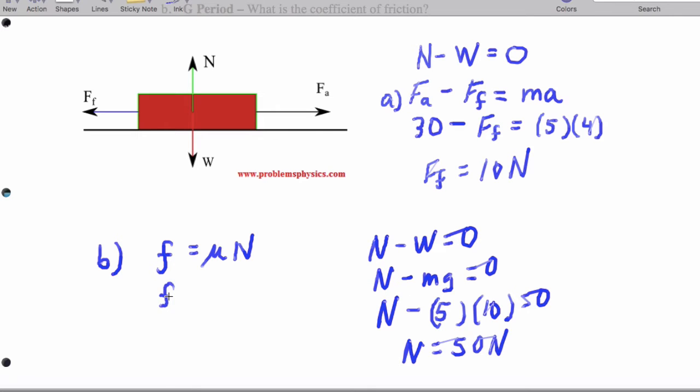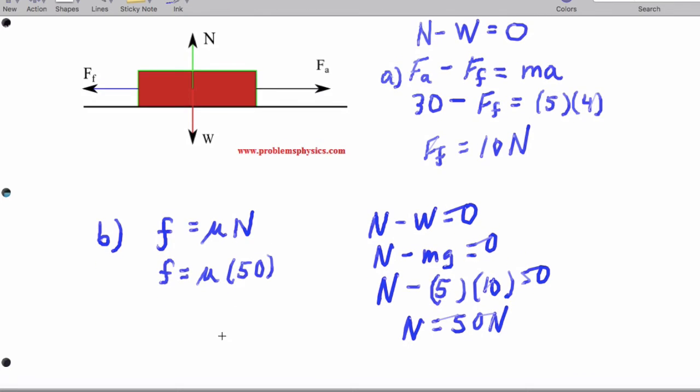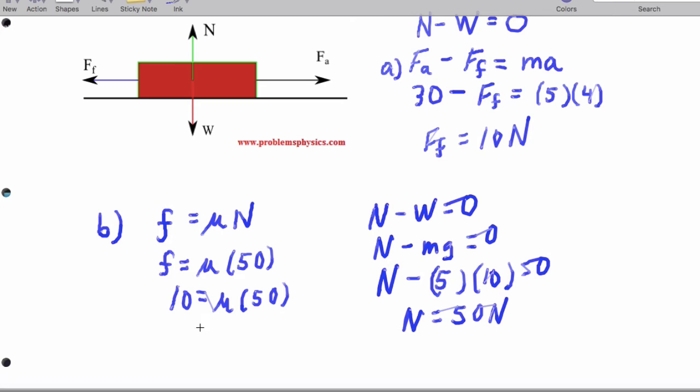So when we solve, we've got friction is mu times 50. That is 10 is mu times 50. So mu equals 0.2.